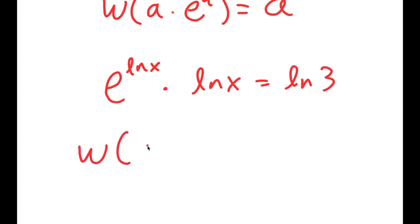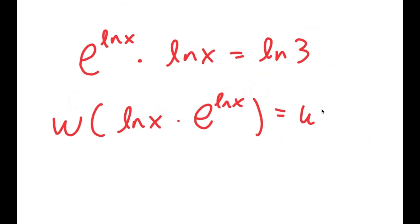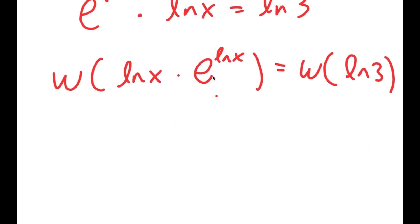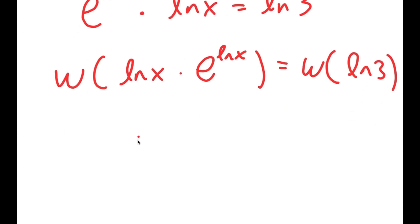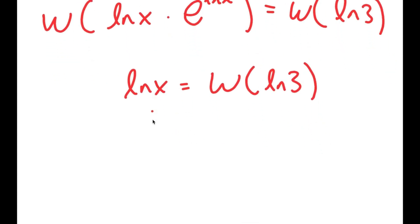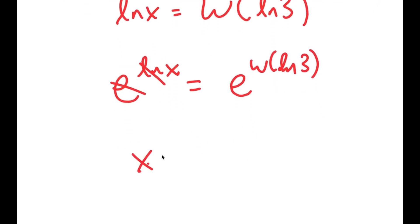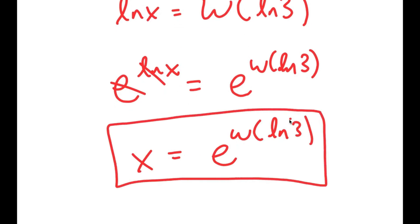So now, if I take the Lambert W function on both sides, I get W of ln x times e to the power of ln x equals W of ln 3. And this left side is just equal to a, so I'm left with ln of x is equal to W of ln 3. Now I want to get rid of this ln, so I'm going to take e to the power of both sides. e to the power of ln cancel out, so I get x is equal to e to the power of W of ln 3. So this is my answer to this equation.